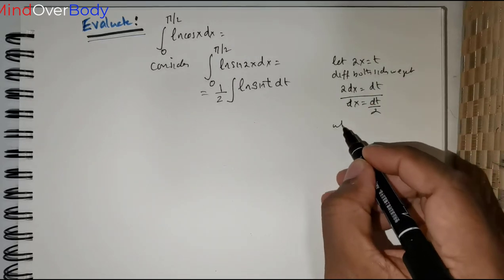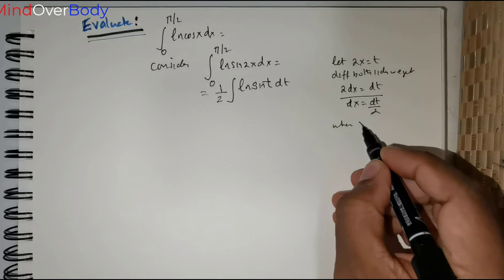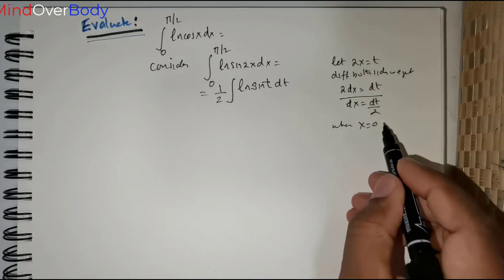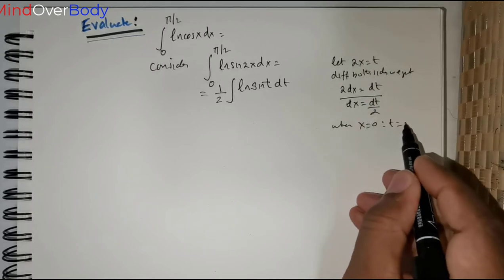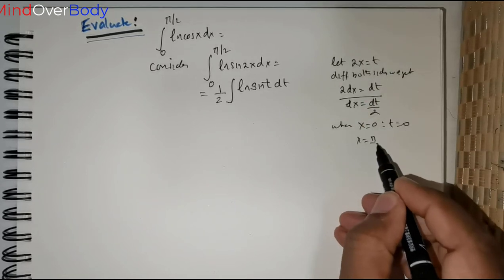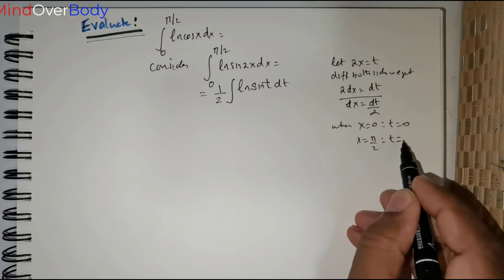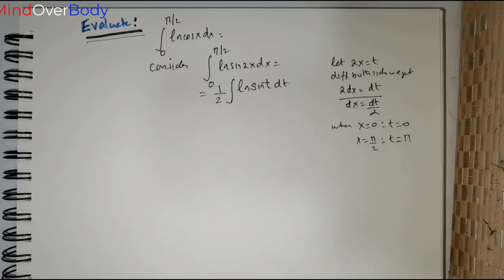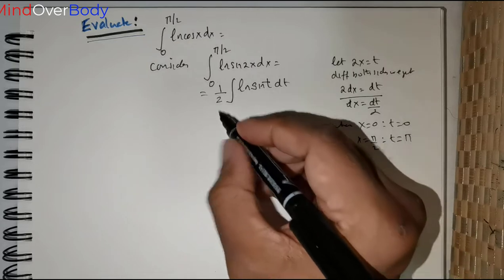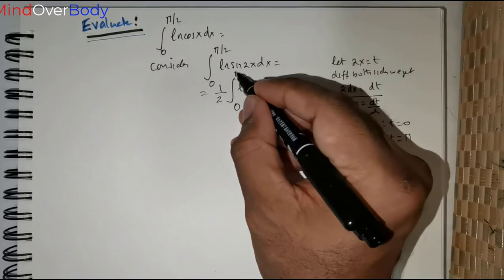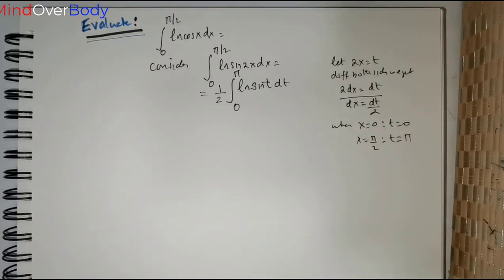We perform the change of limits. When x = 0, t = 0. When x = π/2, t = π. So this becomes the integral from 0 to π of ln(sin t) · dt/2, which equals (1/2)∫₀^π ln(sin t) dt.